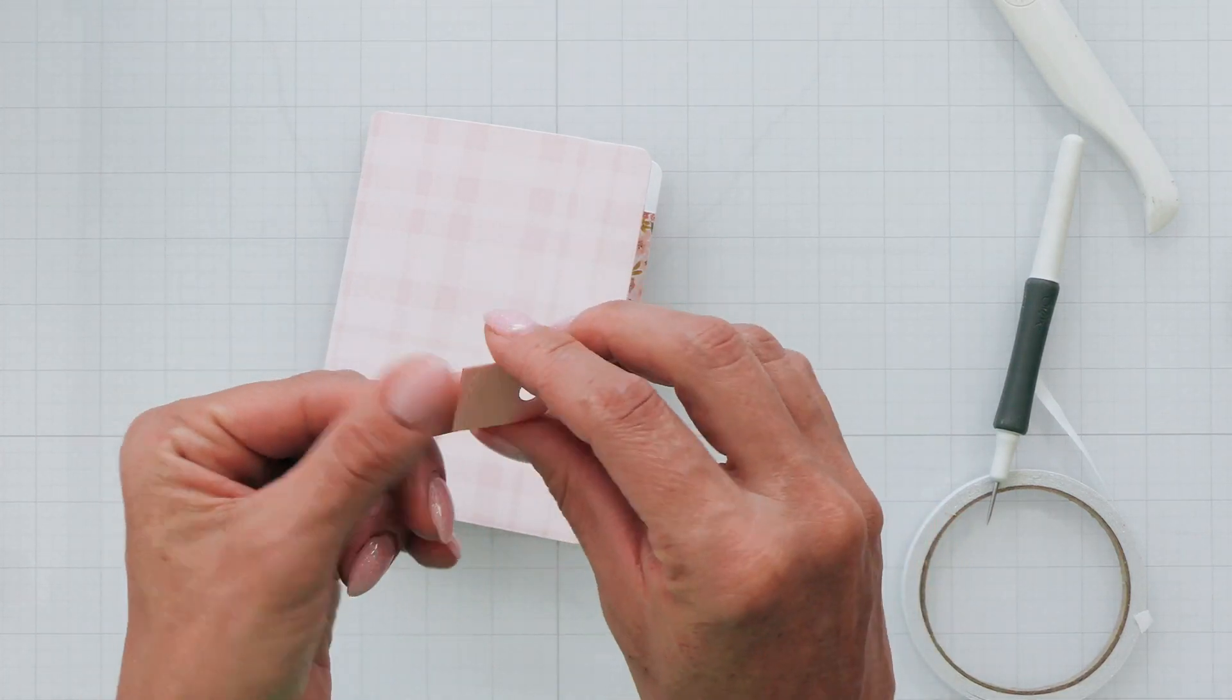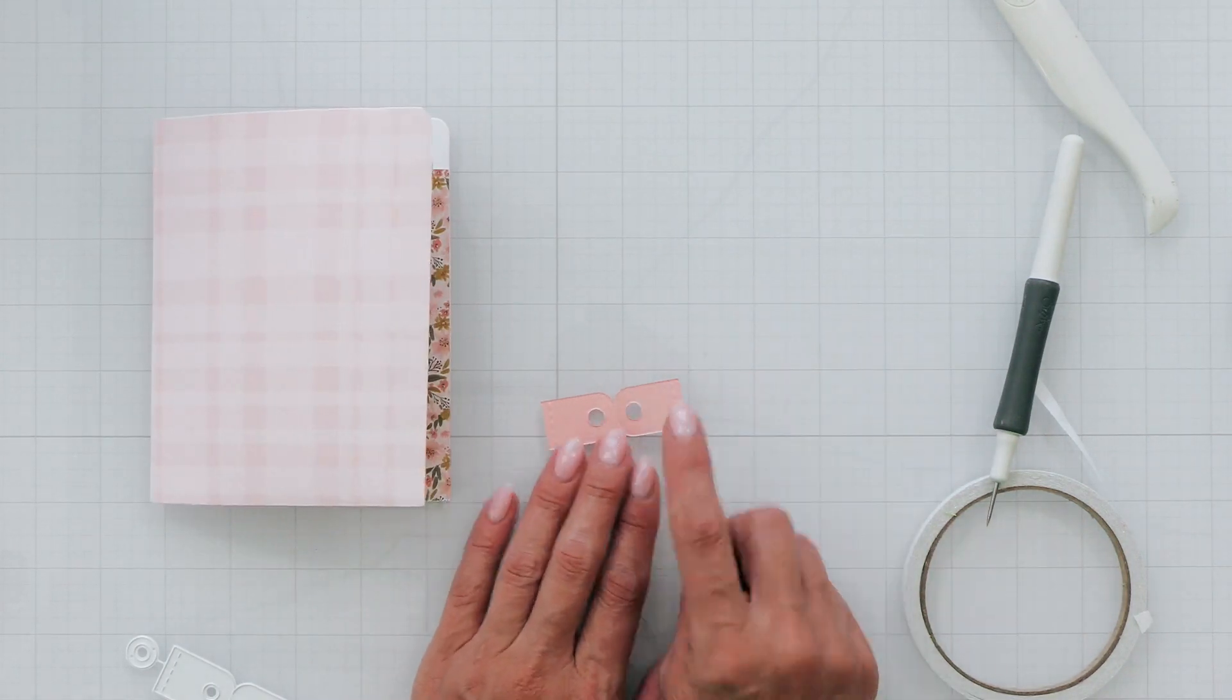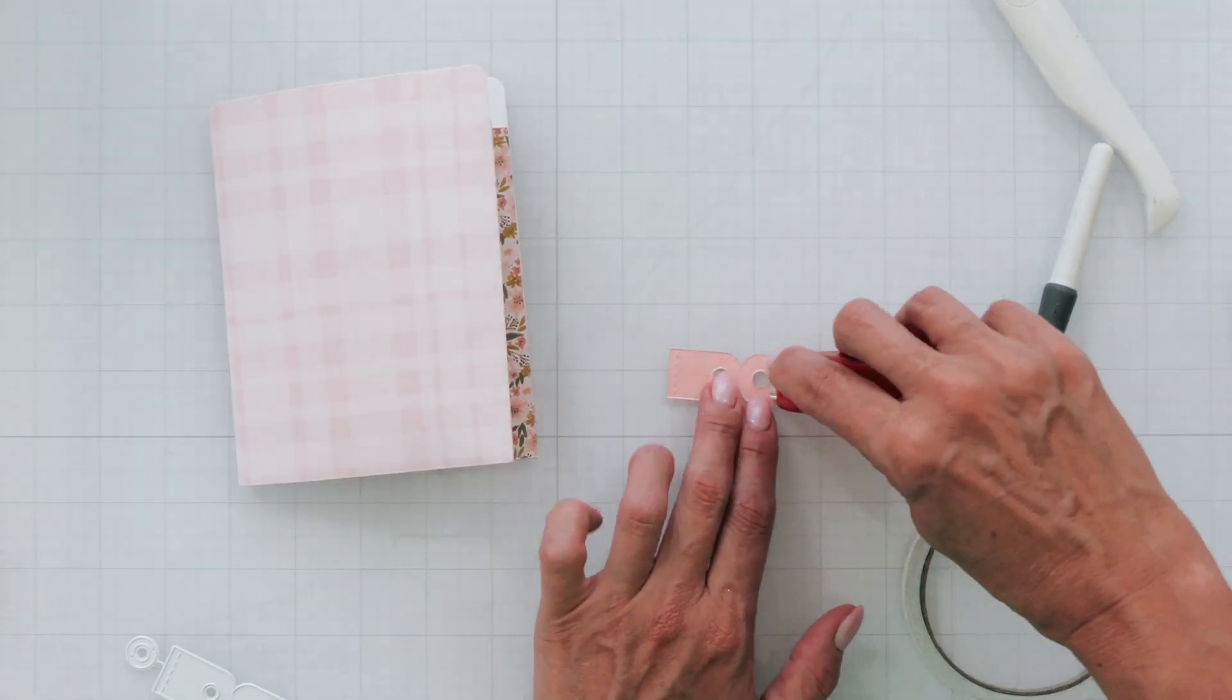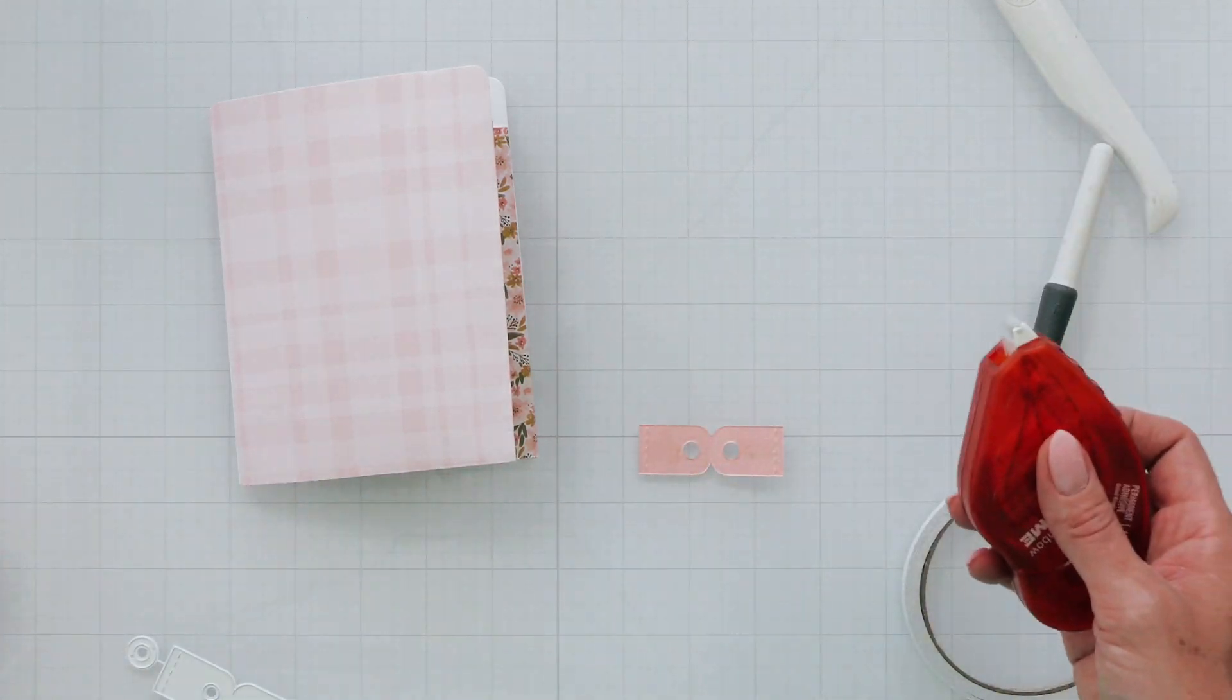Now let's go ahead and if you want to add a little closure to keep your memory album closed, just add a little double stick tape to the inside edge of both of those flaps.